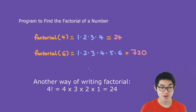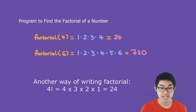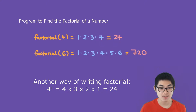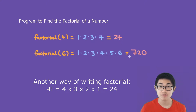For example, if we want to find the factorial of the number 4, it's just basically 1 times 2 times 3 times 4, which gives you 24. Now how about 6? It's just 1 times 2 times 3 times 4 times 5 times 6, which gives you 720.